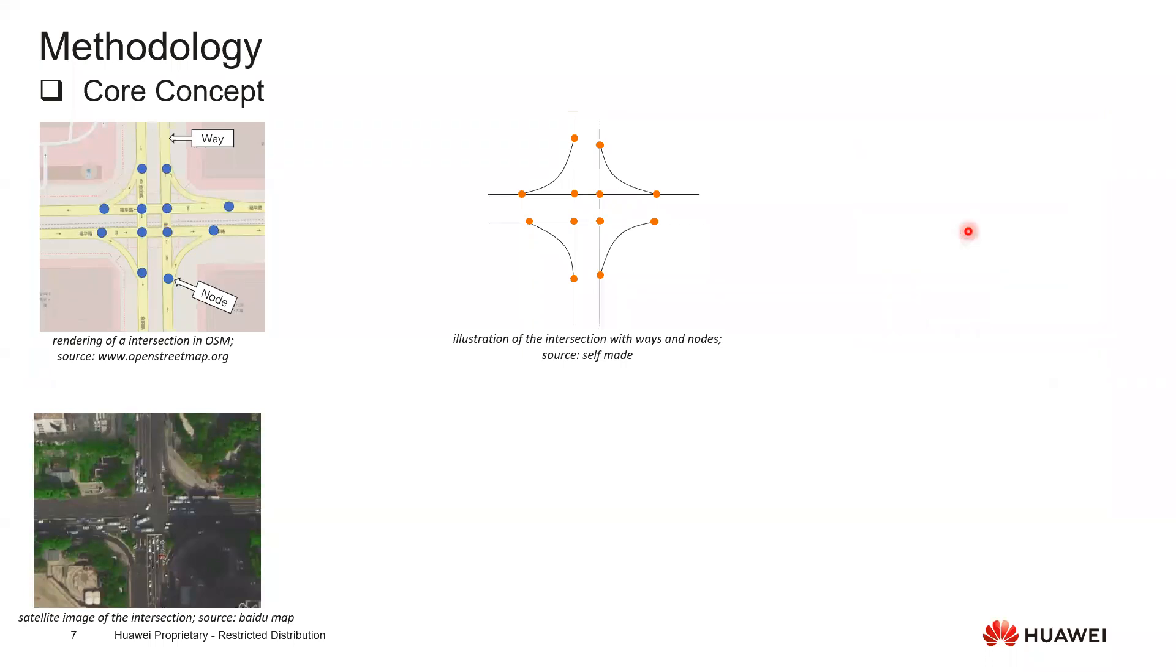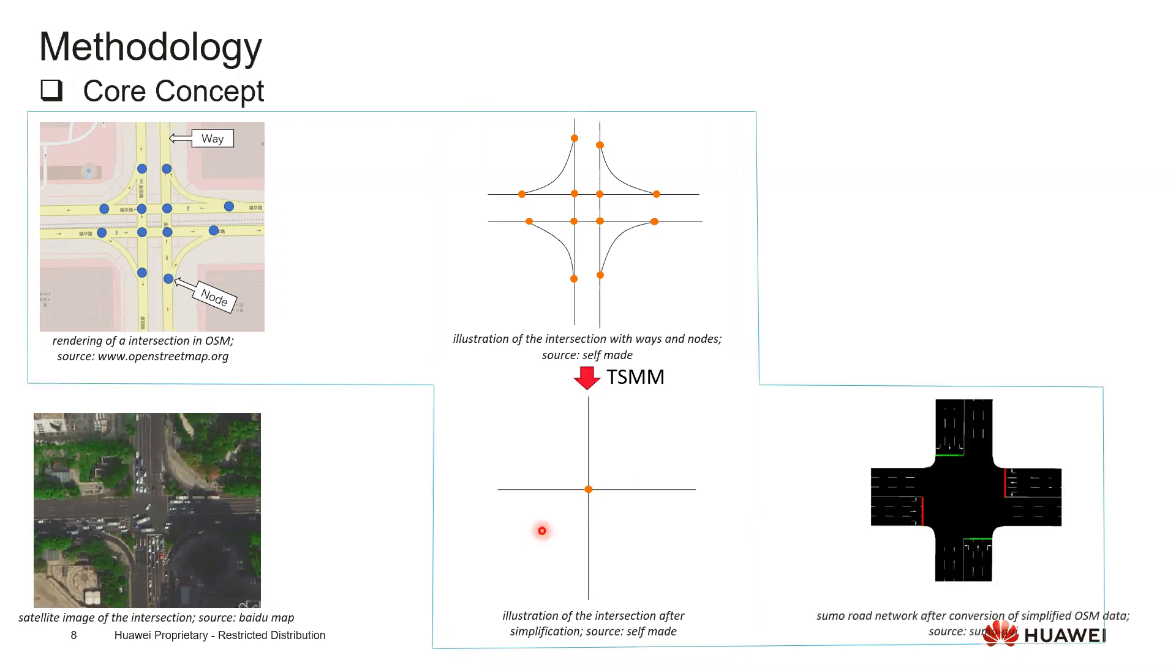Therefore we are thinking the problem here actually is this data representation in OSM - it doesn't have a concept called intersection. So what our TSMM does is it simplifies this OpenStreetMap data, simplifies this intersection into just two lines. Each of them represents the road and the crossing point is then the intersection. If we feed this simplified OSM data to NetConvert, we can simply get a very clear and correct intersection.